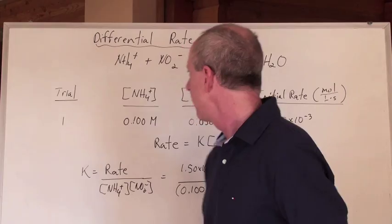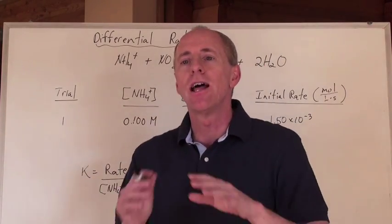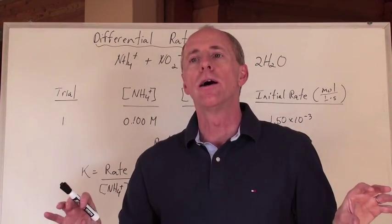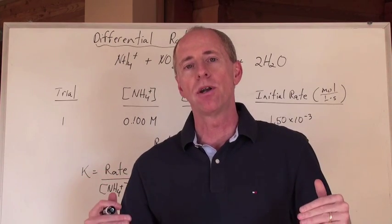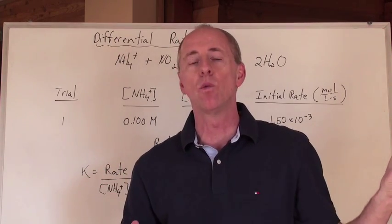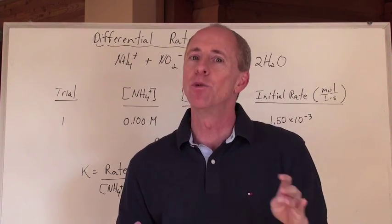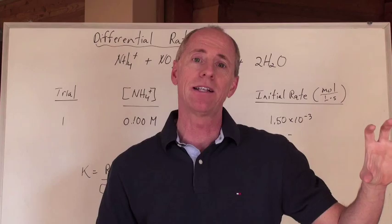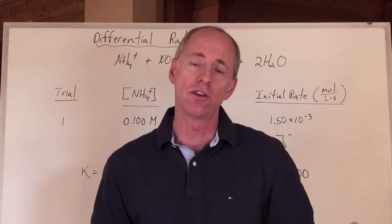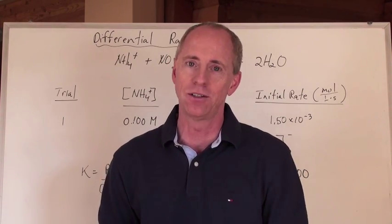So what do you do? Well, usually the lines of data are all very easy to operate with, so you can take one line of data, one trial of data, and plug it into the formula. What you're supposed to do is take every line of data, do a calculation for everyone, and then average all of your constants together. That's the best way to do it.